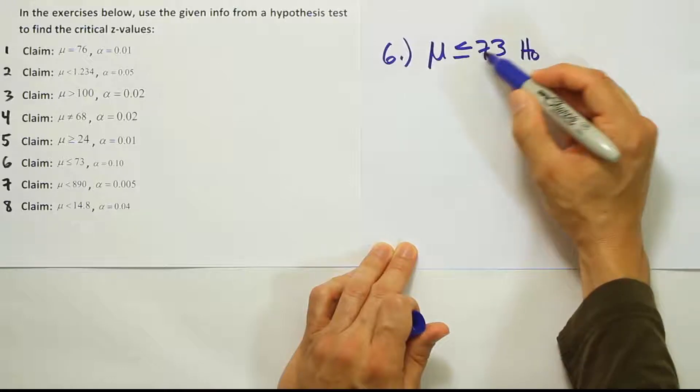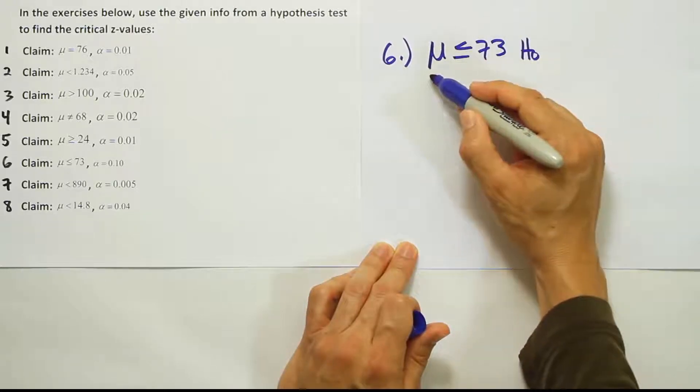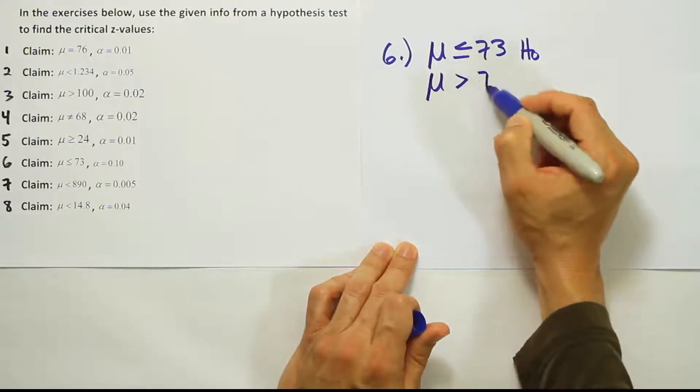Well, that would make it H0 because of the equal sign, right? The equal sign always indicates H0, so we're going to say that the alternative hypothesis must be greater than 73.